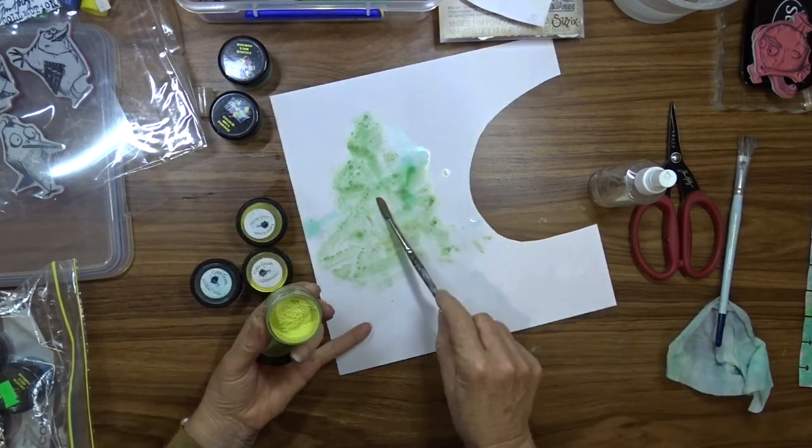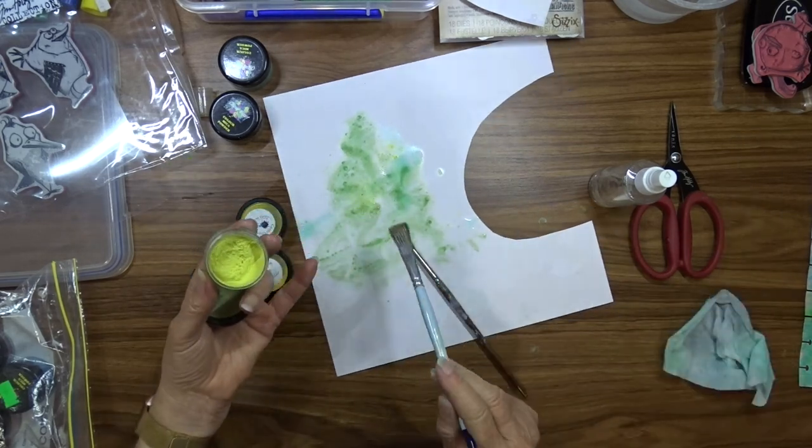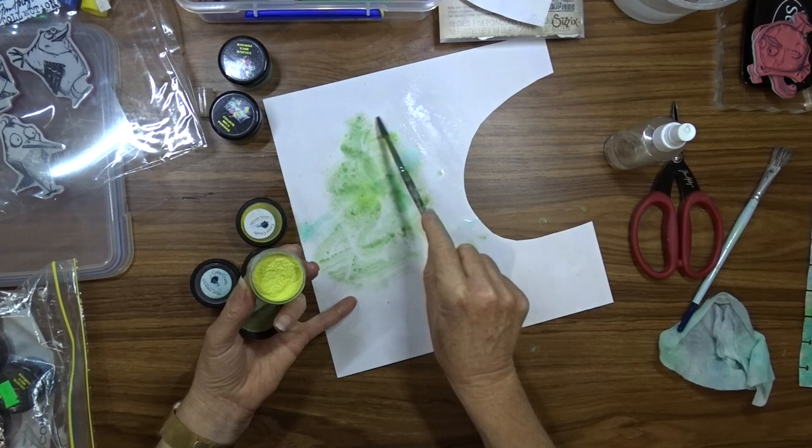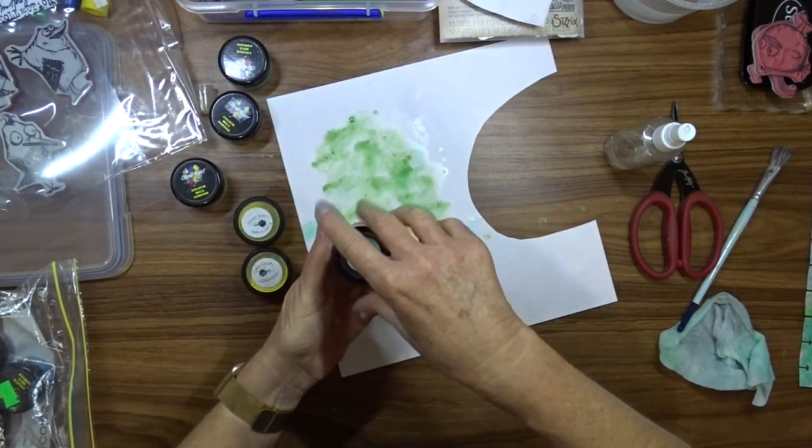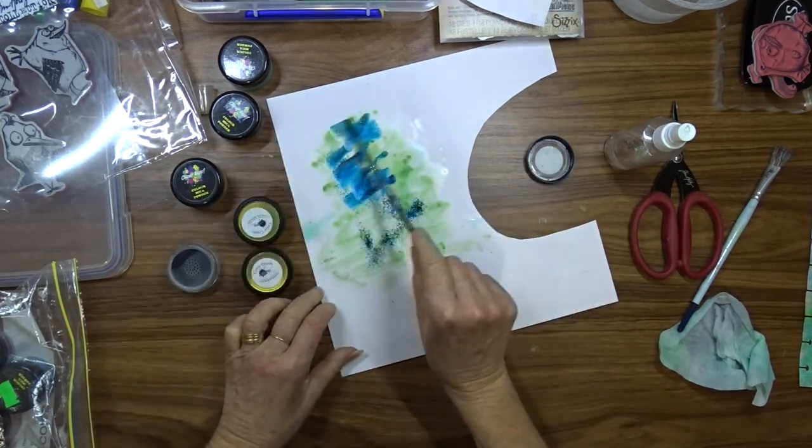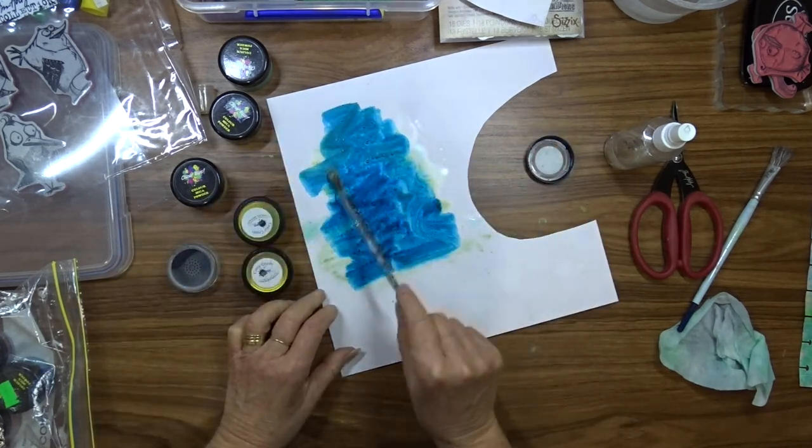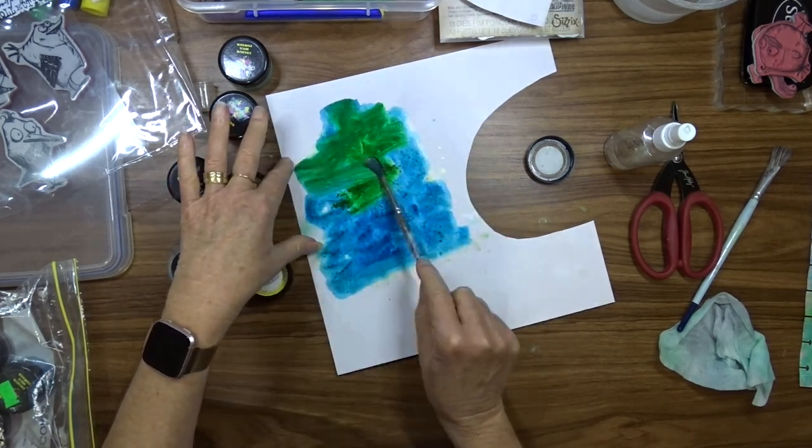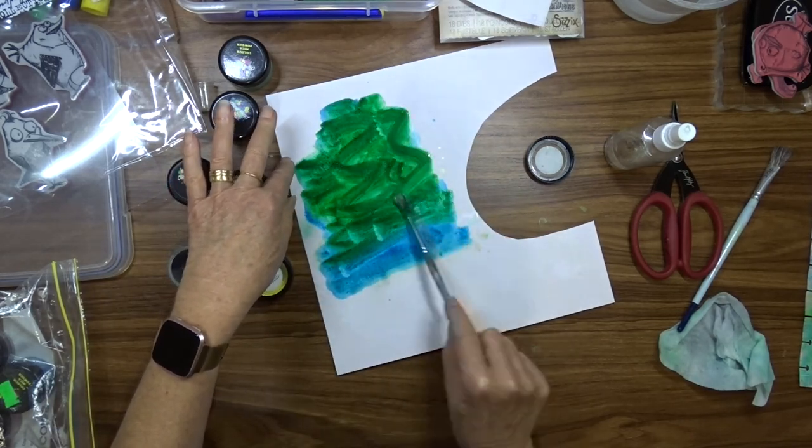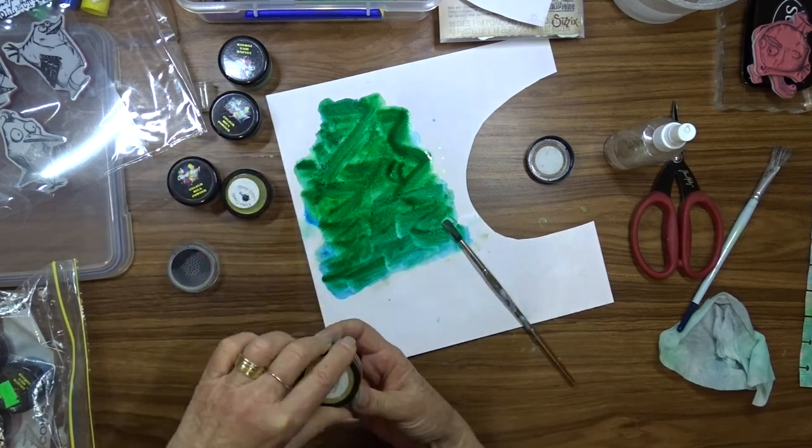I spray my background liberally with some water and then I sprinkle the powders onto the water and use my brush to move the powders around. I'm not careful about where the powders go and I'm not too worried about the overall coverage because I'm going to actually cut a shape out of this so this is not going to be the finished item.